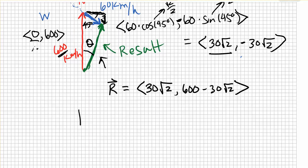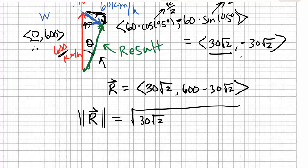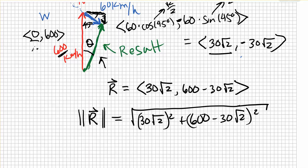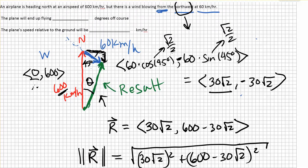The magnitude of this vector is the square root of the x-coordinate squared plus the y-coordinate squared. So the magnitude of the resulting vector r equals √[(30√2)² + (600 − 30√2)²]. This answers the question of the plane's speed relative to the ground — you would plug this into your calculator to get the approximate speed.